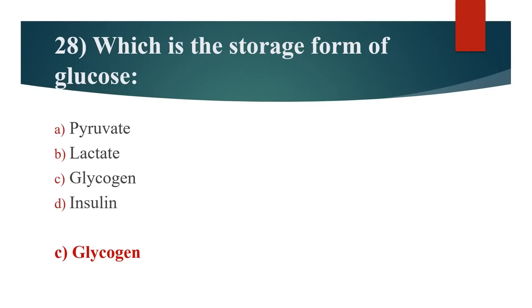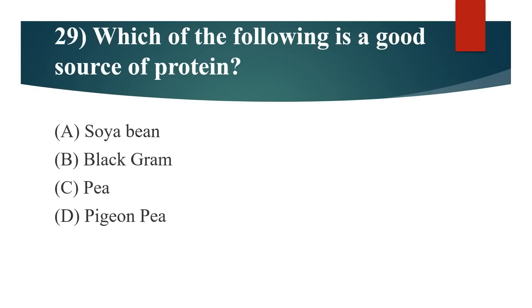29th question: Which of the following is a good source of protein? Option A: Soybean. Option B: Black gram. Option C: Pea. Option D: PGNP. Answer is Option A: Soybean.